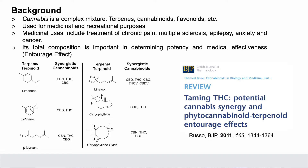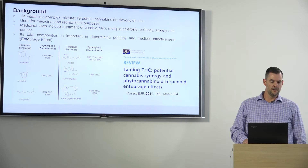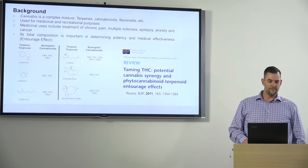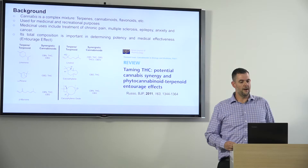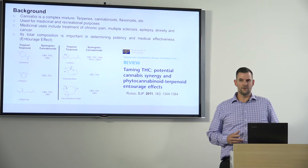A little bit of background. We know cannabis is a complex mixture made up of terpenes, cannabinoids, different flavonoids, and among many other compounds. It's been used for many years, both for medicinal purposes as well as recreational purposes. Its medical purposes include treatment of chronic pain, multiple sclerosis, epilepsy, anxiety, and cancer, just to name a few. Its total composition is very important in determining its potency as well as its medicinal uses. This effect has been described as the entourage effect — the effect of all the different compound classes that may be present, rather than just the traditional characterization of THC and cannabinoid content.